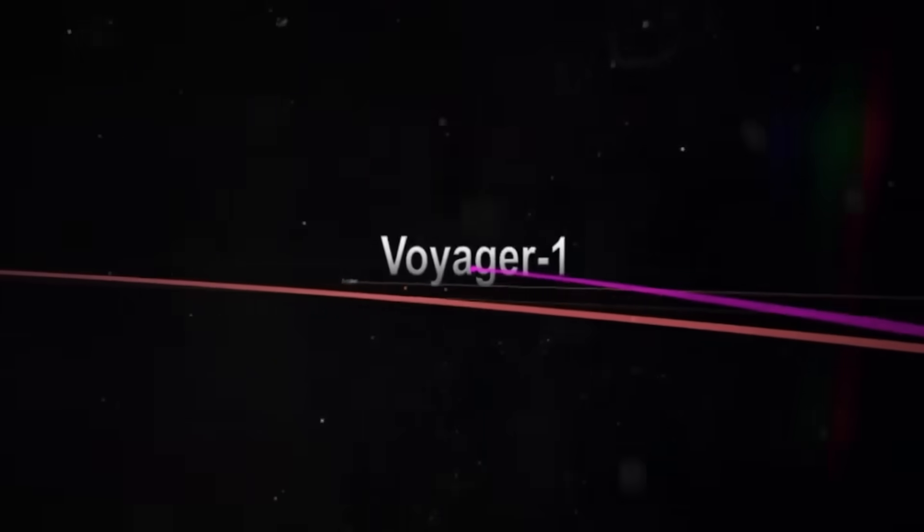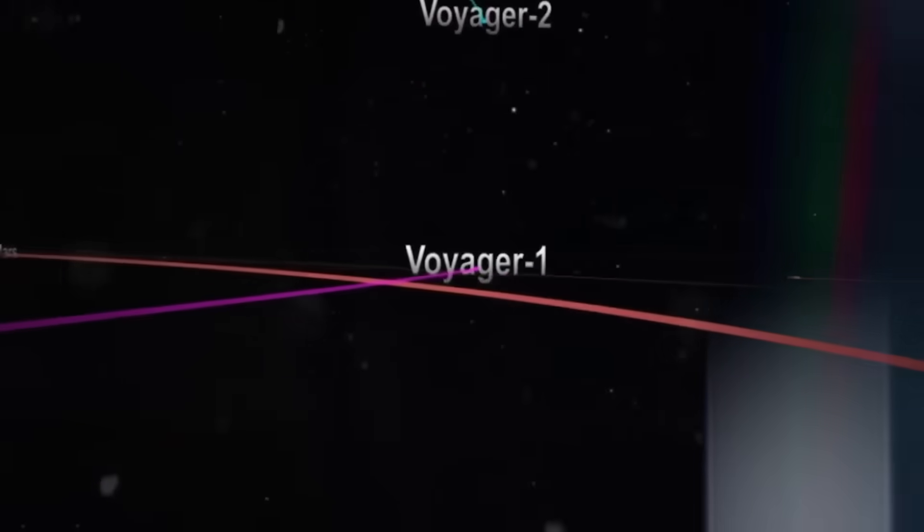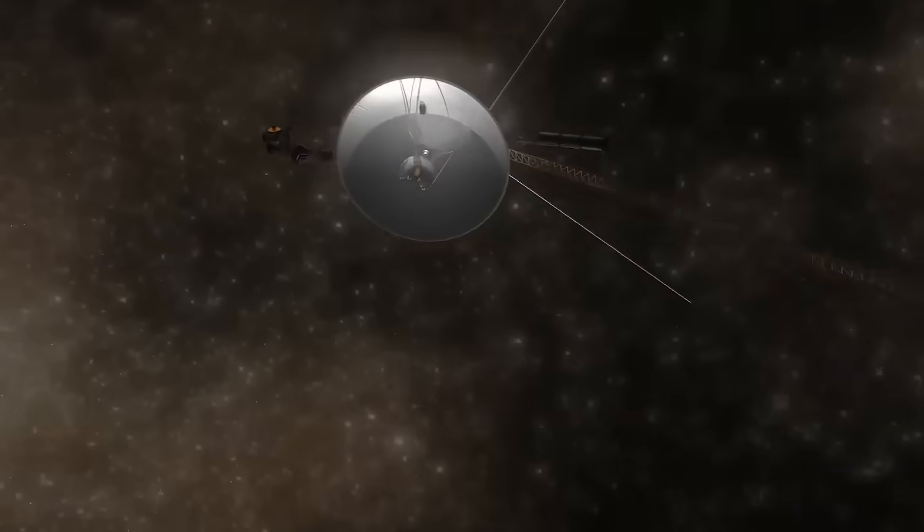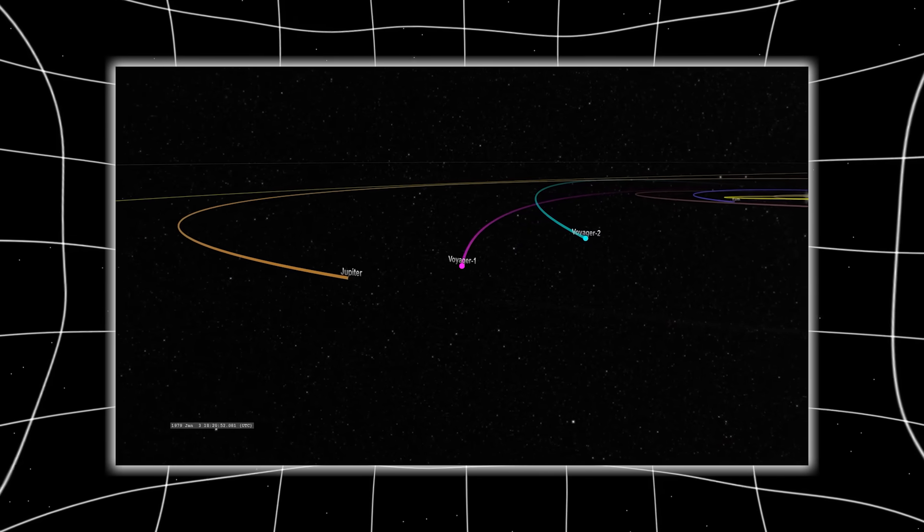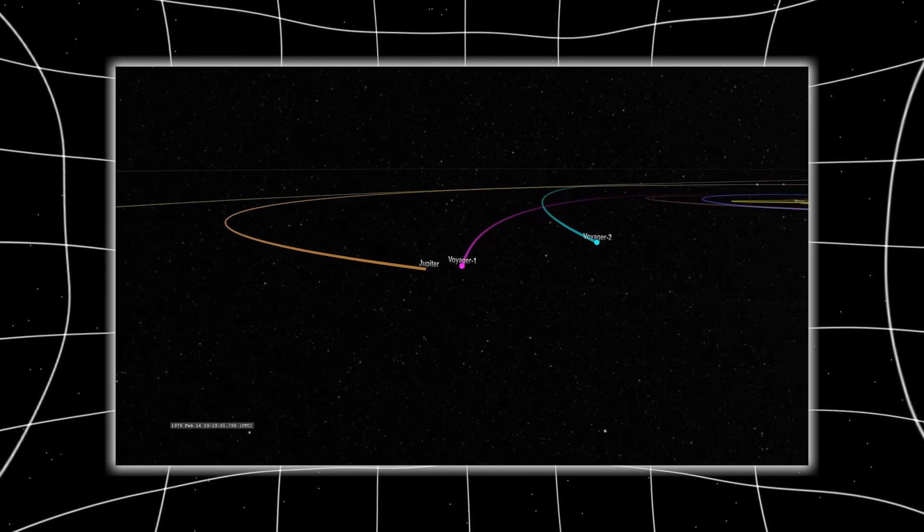Then came the final shock. Voyager 1 shifted course. Not a drift, not an anomaly, a controlled, deliberate arc, a turn, not back to Earth, not toward a star, but into a region with no known mass, no gravitational pull, no celestial body to explain the change.